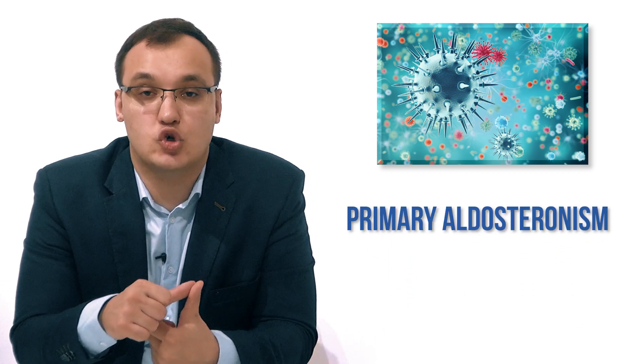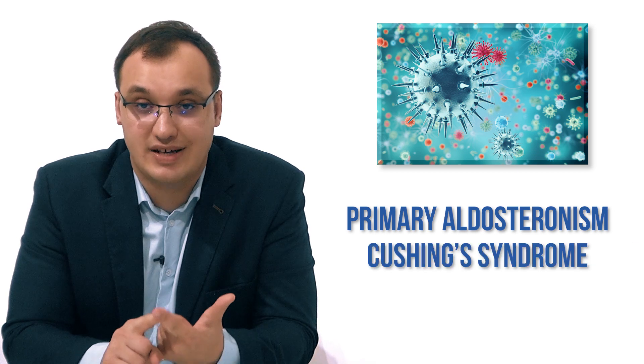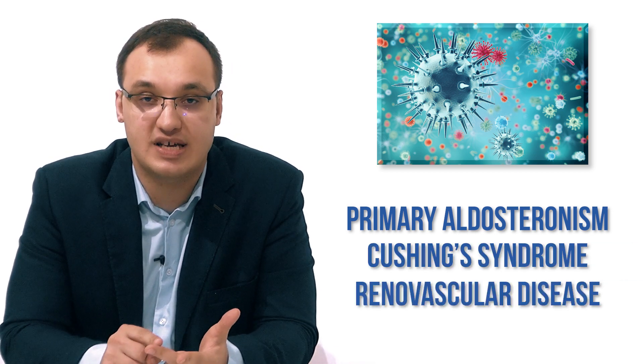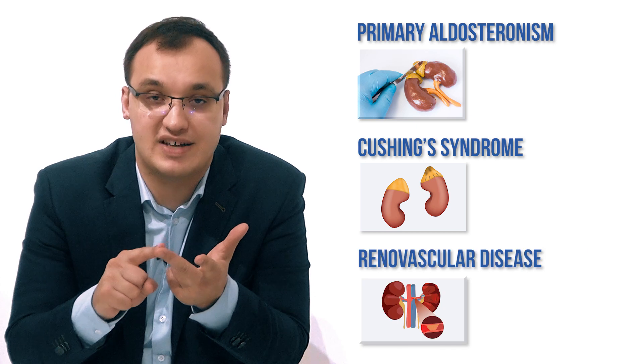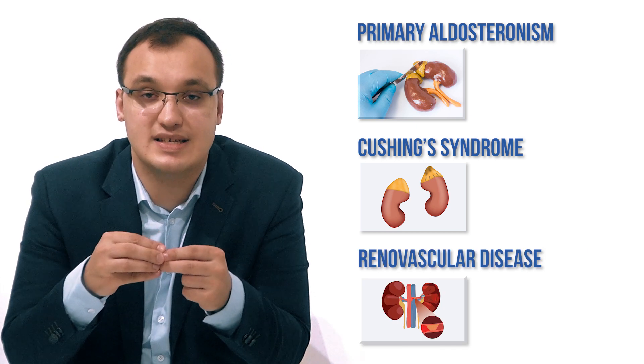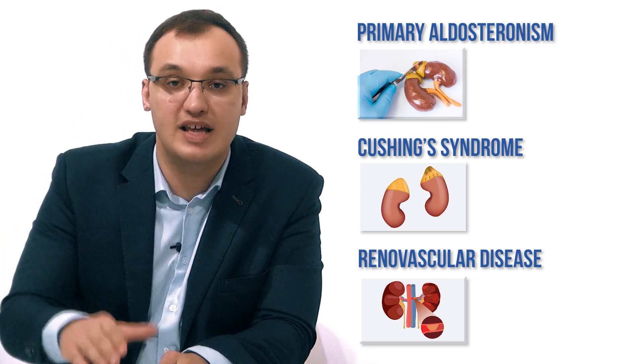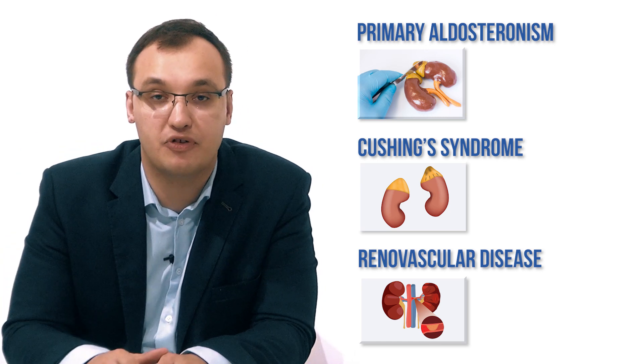I will only mention three here: primary aldosteronism, Cushing syndrome, and renal vascular disease. These three diseases have to be searched for if the potassium level is not increased by diet and we need to supplement it with potassium.